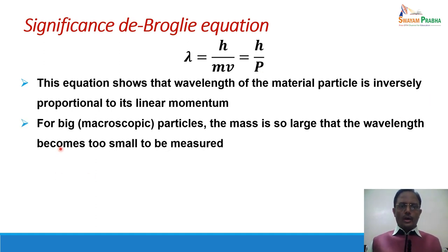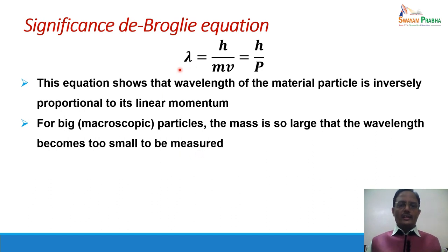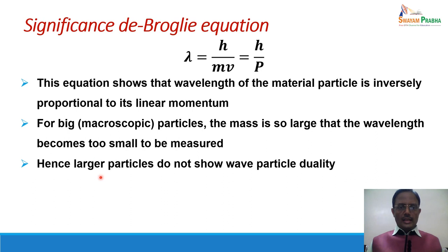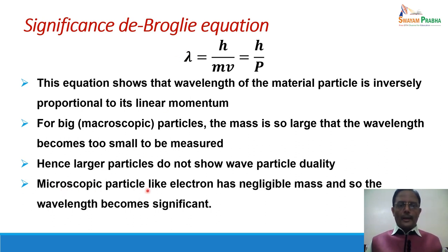For big or macroscopic particles, the mass is very large, so momentum p becomes very high and λ becomes too small to be measured. For macroscopic particles, the wavelength is insignificant — the wave associated with a macroscopic particle is insignificant. Larger particles do not show wave-particle duality because the wavelength is extremely small or negligible. Microscopic particles like electrons have negligible mass, so the wavelength becomes significant for tiny particles with very small mass and very high velocity.